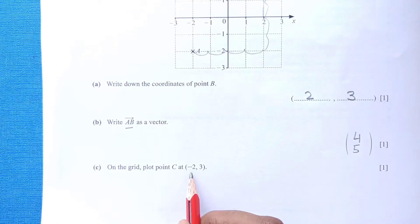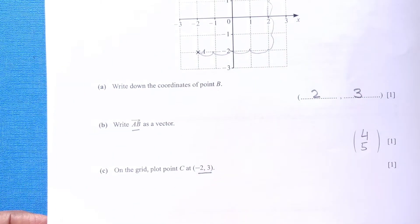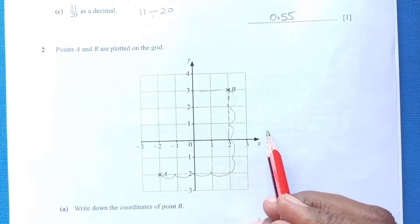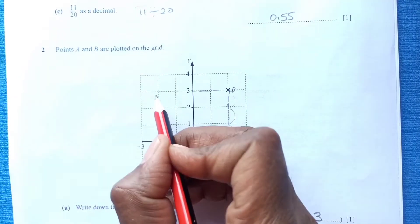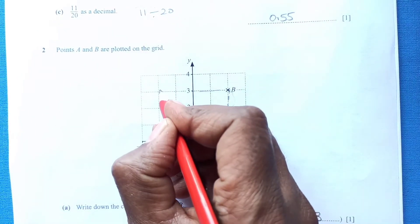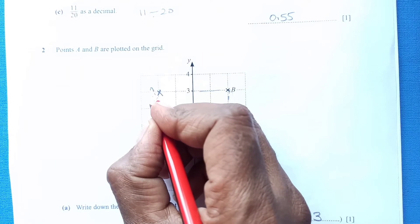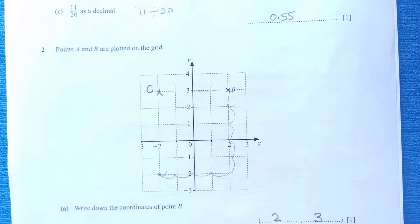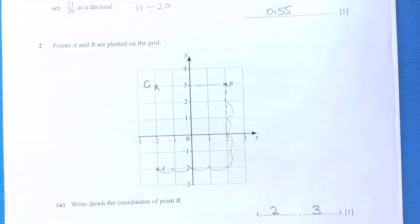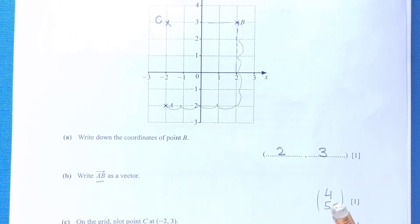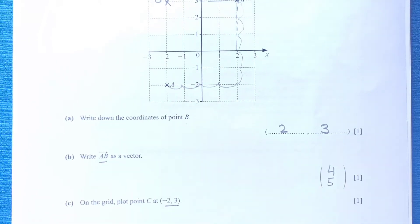On the grid, plot point C which is negative 2 and 3. C negative 2 is here, 3 is here. So this is the point. We remember to label this because this name is C. We have to put C on this grid.